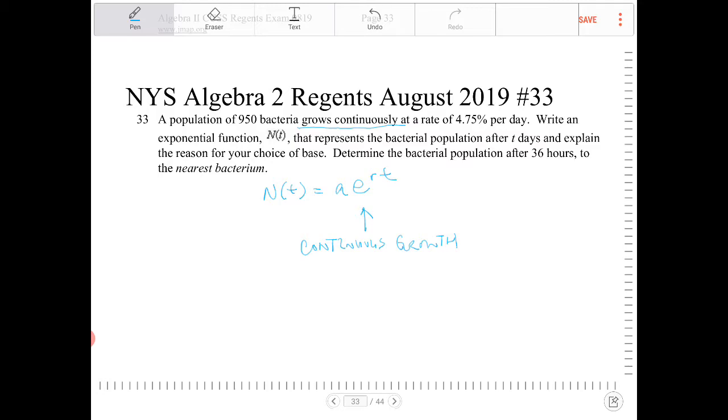And since we're given R is equal to 4.75% per day, so R is 0.0475, and A here is 950, and T is measured in days.